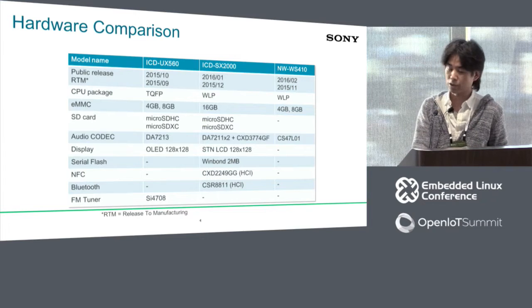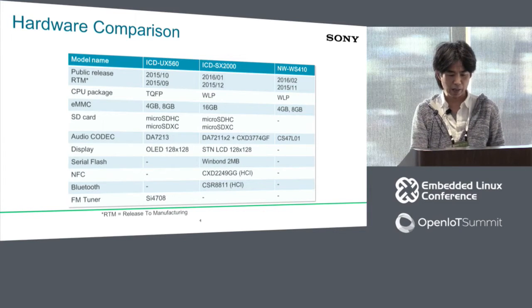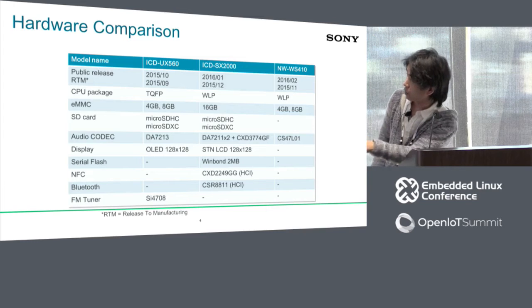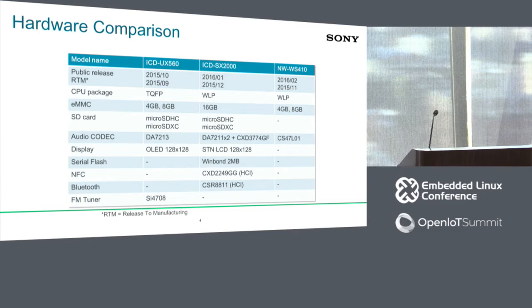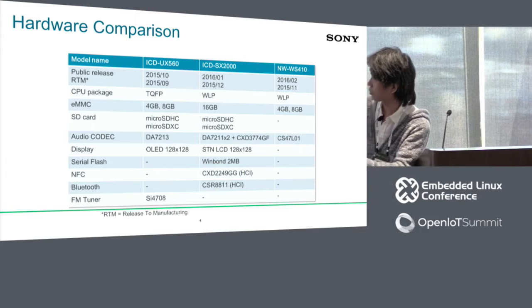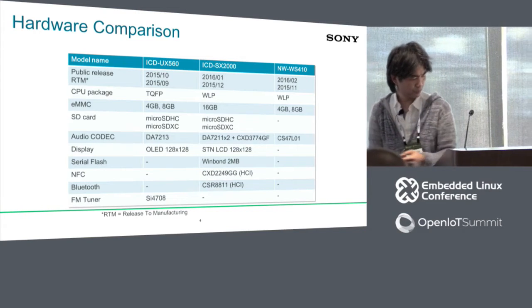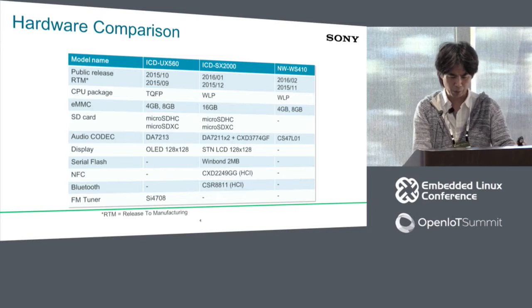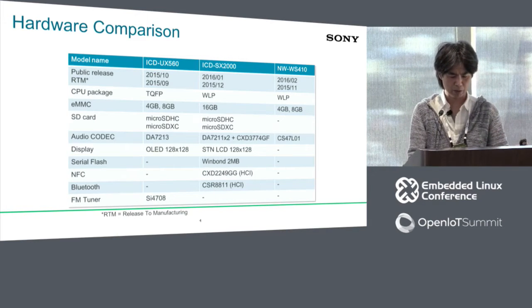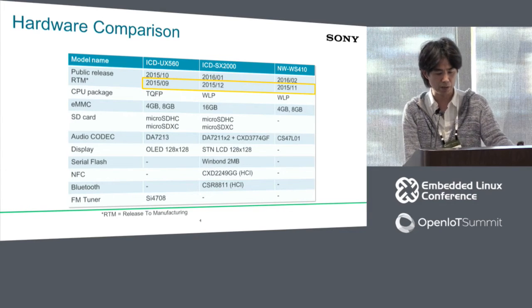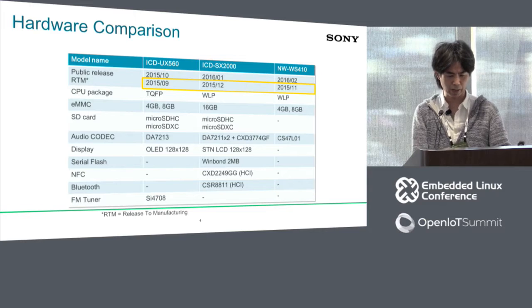This table shows internal hardware components. As you can see, there are many differences between the products — for example, the audio part and audio codec are different, and the display is also different. The SX3s has SPI flash, NFC, and Bluetooth. There are two important things in this chart. First is the release schedule — it was very tough for us to release all of this software in just four months, so we had to consider productivity as well as quality.